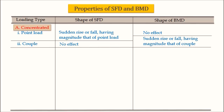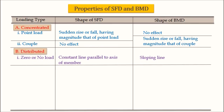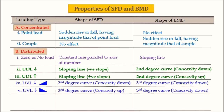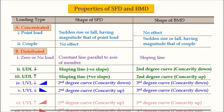For concentrated loads, there are two effects: point load and couple. When a point load acts, there is a sudden rise or fall in the SFD but no effect on the BMD. When a couple acts, there is no effect on the SFD but a sudden rise or fall in the BMD. For distributed load: when there is no load on a segment, the SFD is a constant horizontal line and the BMD is a sloping line. For UDL and UVL, the shapes of SFD and BMD were discussed in session 1.